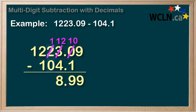In the tens column, we now have 1 minus 0 equals 1. And in the hundreds column, we have 2 minus 1 is 1.